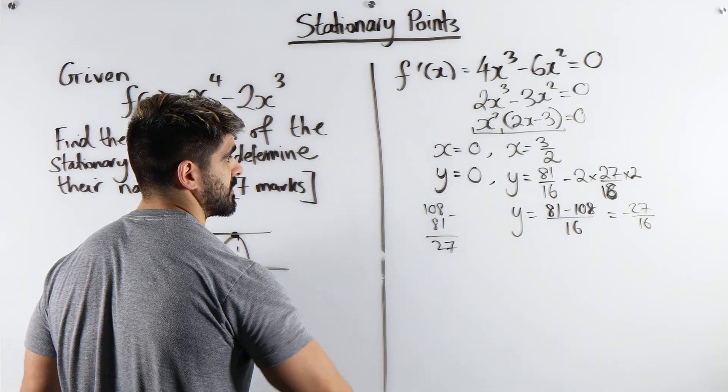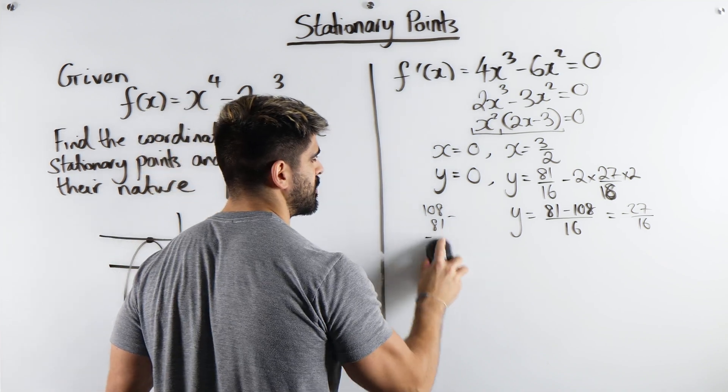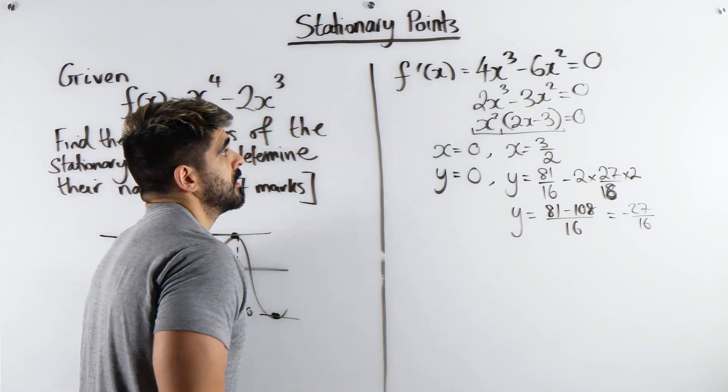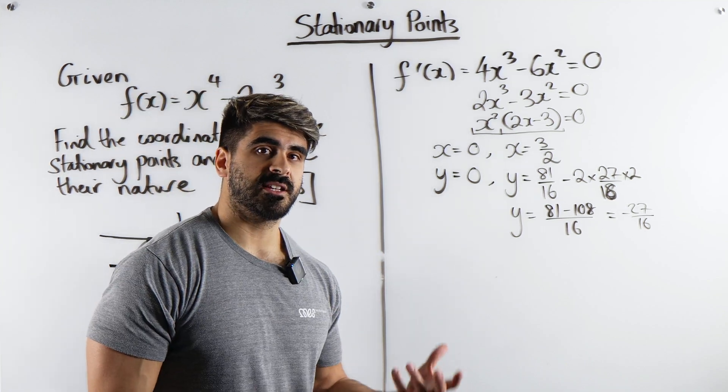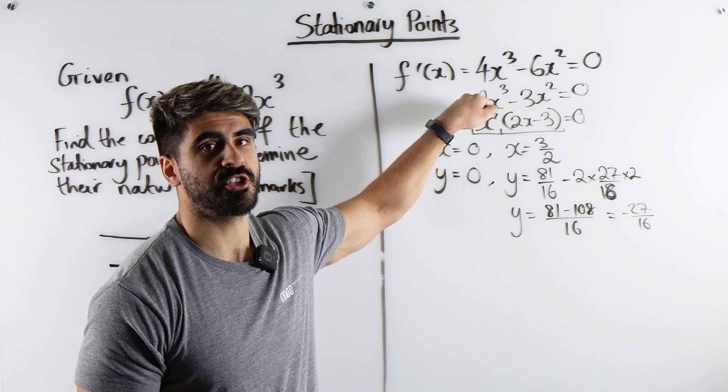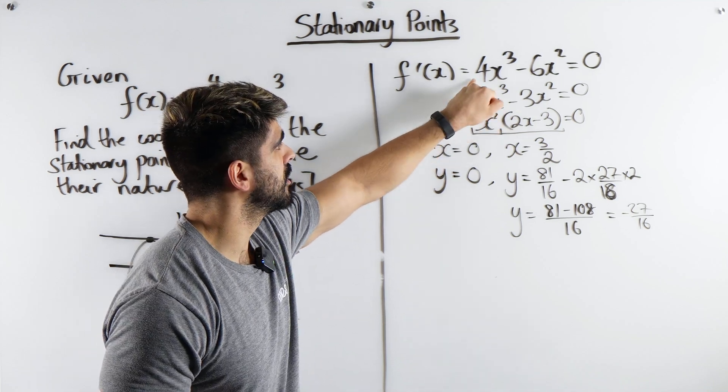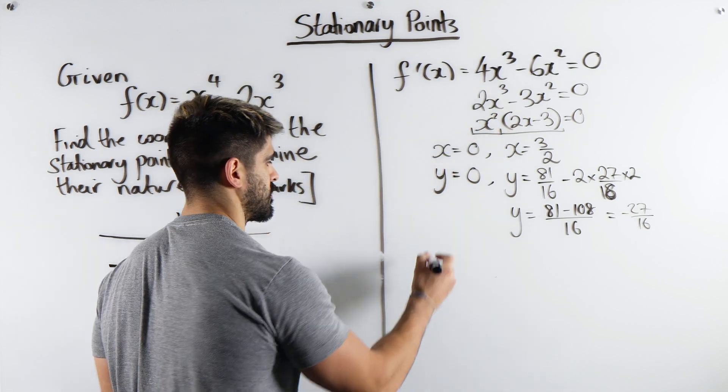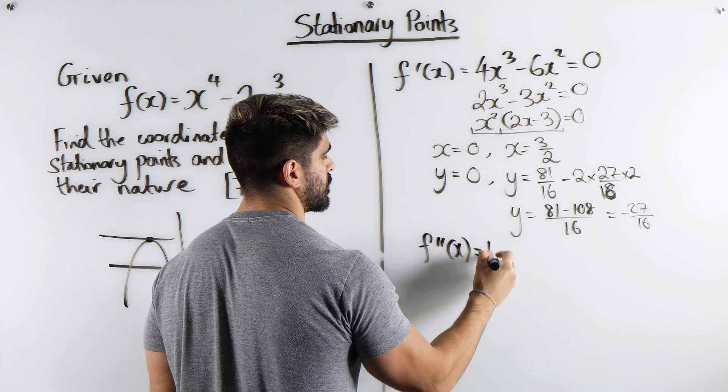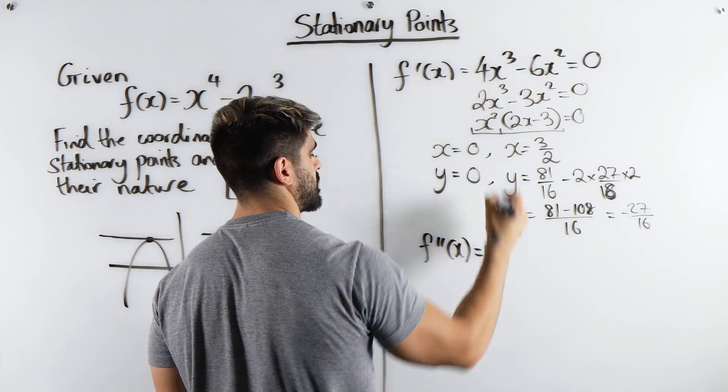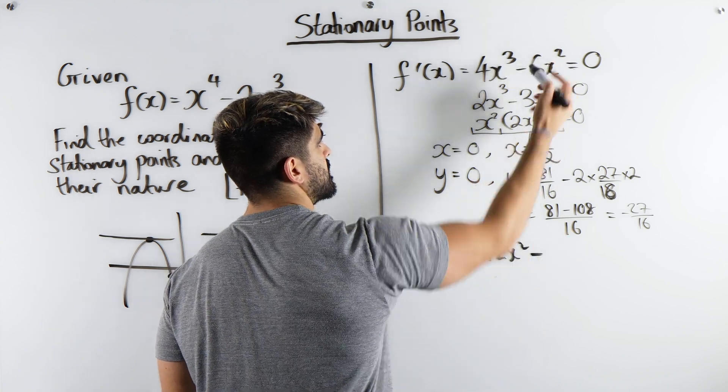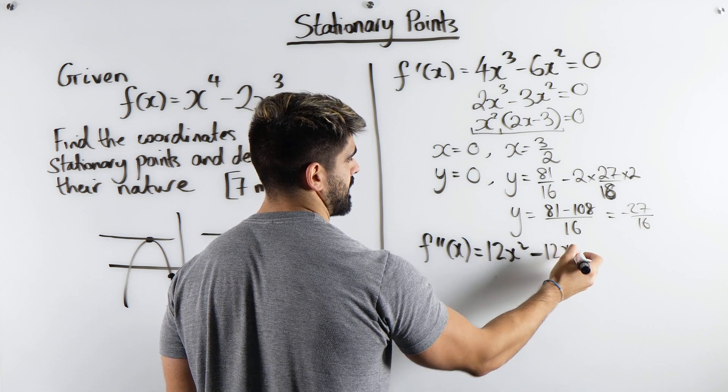Now we obviously need to classify these points. I mean it's only to do with the x values anyway. Now to classify we need the second derivative. The second derivative here, what some students do is they differentiate this. That's the simplified version. We're going to differentiate this. We just do the same thing. We bring down the 3, 4 times 3 is 12, then x squared, minus 6 times 2 is 12, and then we have x.